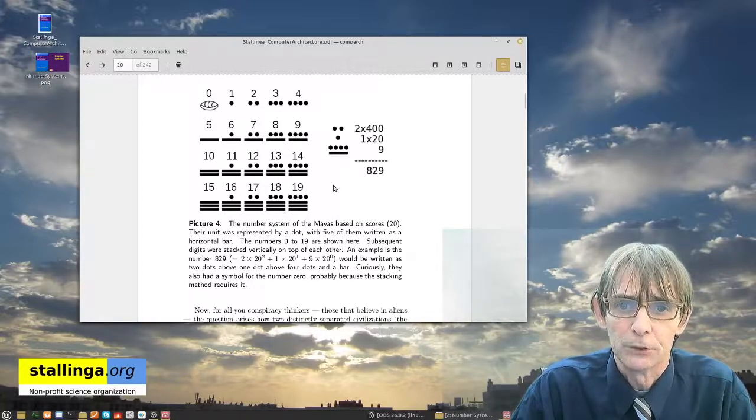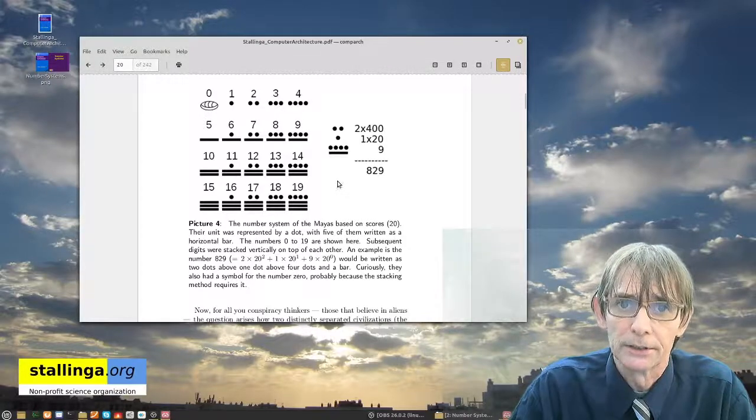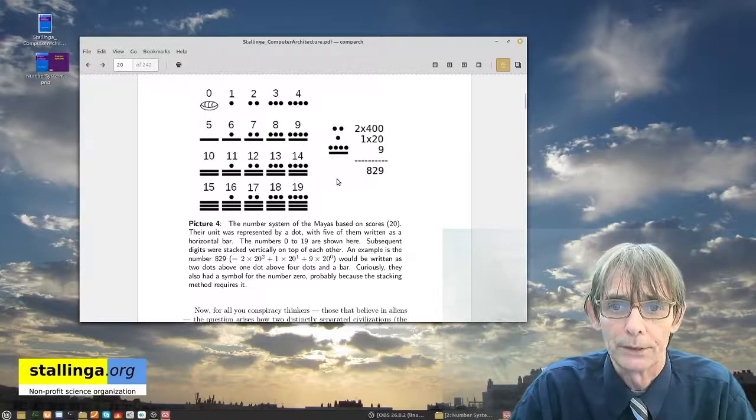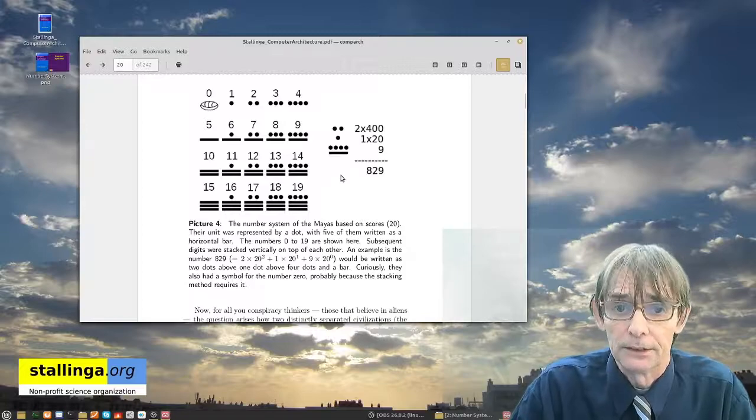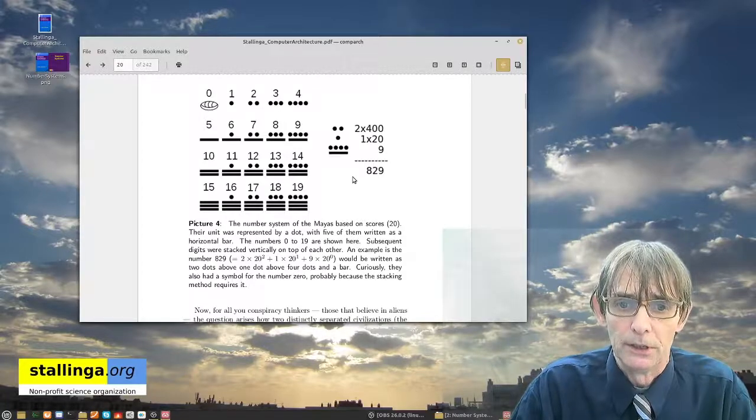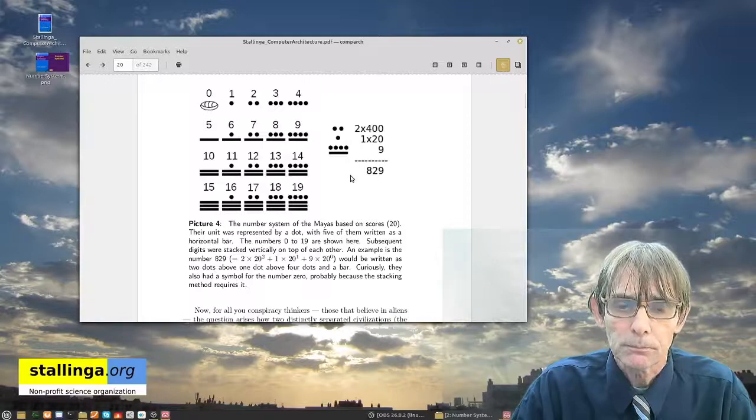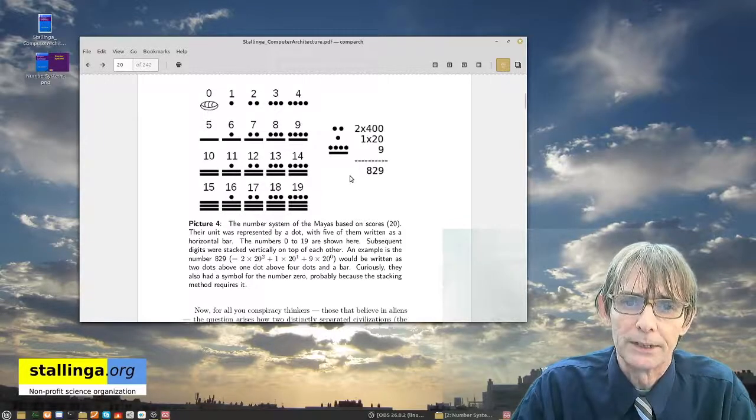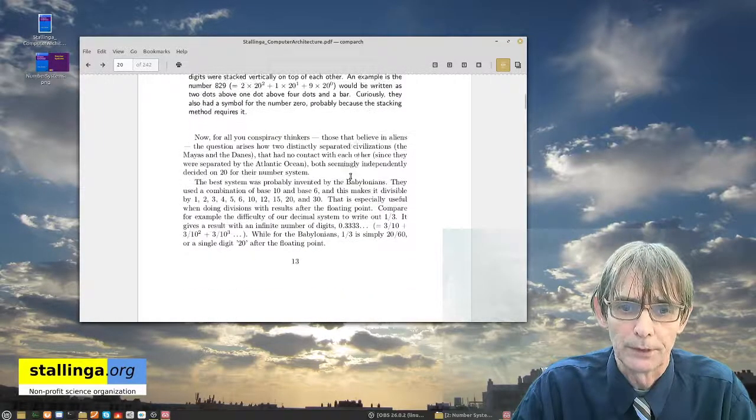For instance, the French, they use it. When they talk about quatre-vingt, they talk about four times twenty. That is then, of course, based on twenty. Twenty is also called a score. And this is quite often used as a base for a system of counting.